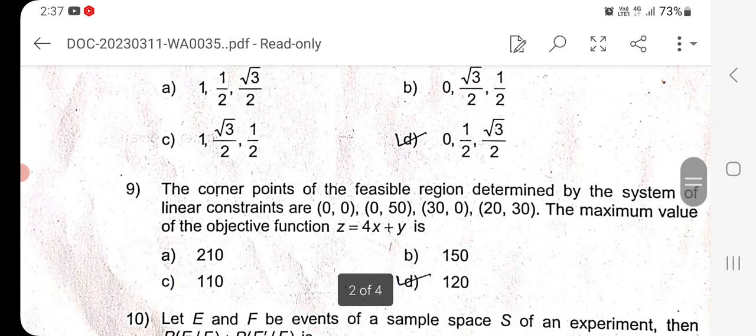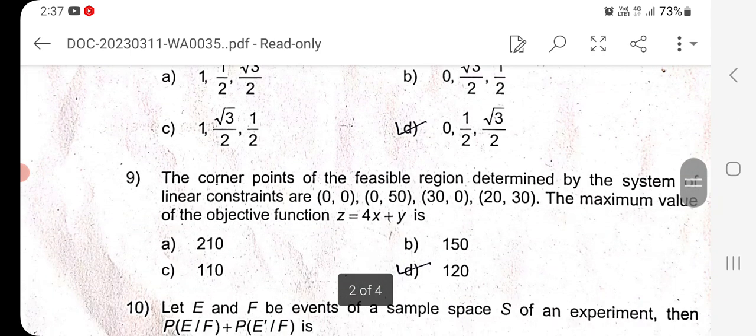Question 9: The corner points of the feasible region determined by the system of linear constraints are (0,0), (0,50), (30,0), and (20,30). The maximum value of the objective function Z equals 4X plus Y is found by substituting the values of the ordered pairs in the given objective function. Therefore, the maximum value is 120. Option D is the right answer.